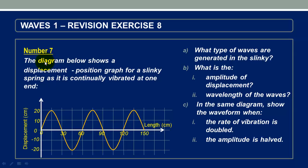In question 7, we are told that the diagram below shows a displacement-position graph for a slinky spring as it is continually vibrated at one end. In part A, we are asked what type of waves are generated in the slinky. Let's start this question by reviewing how a slinky spring is used to demonstrate transverse and longitudinal waves.